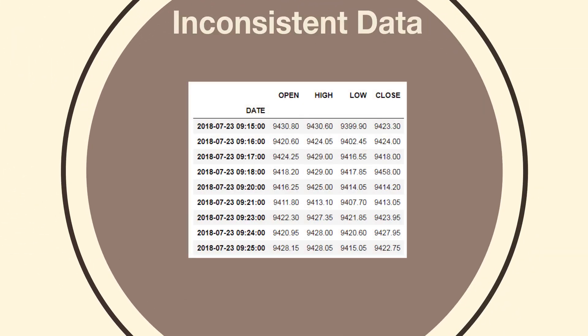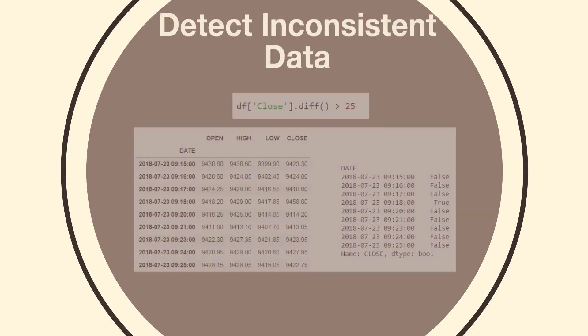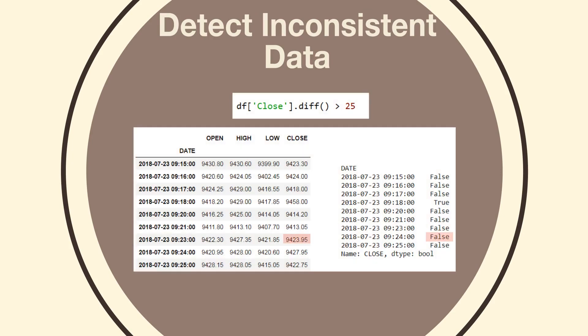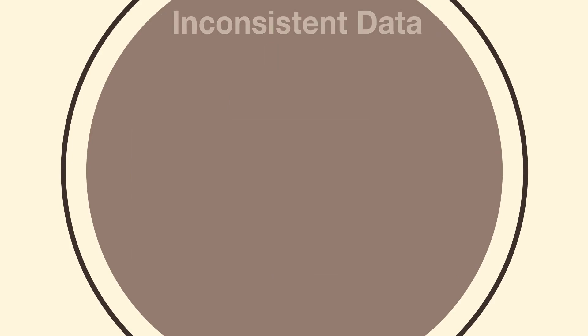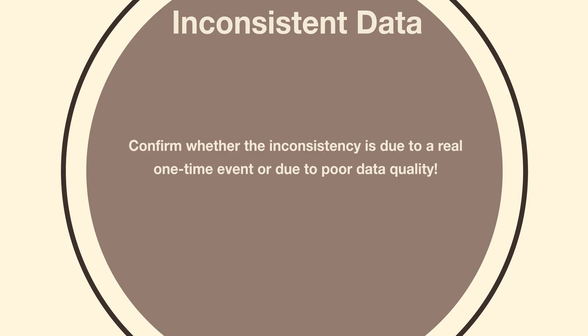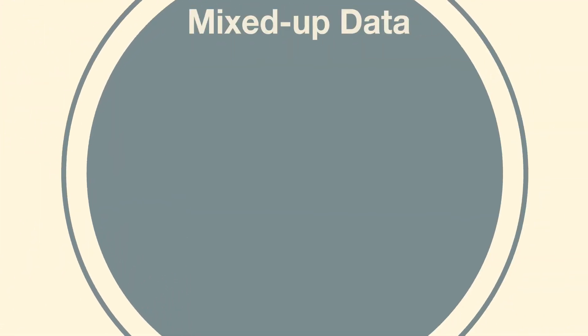Inconsistent data can occur in different forms — for example, a spike in the price series or volume. Checks and balances in the code can help detect such data inconsistency. Before adjusting for data inconsistency, it is important to confirm whether it is due to a real one-time event in the security or due to poor data quality.